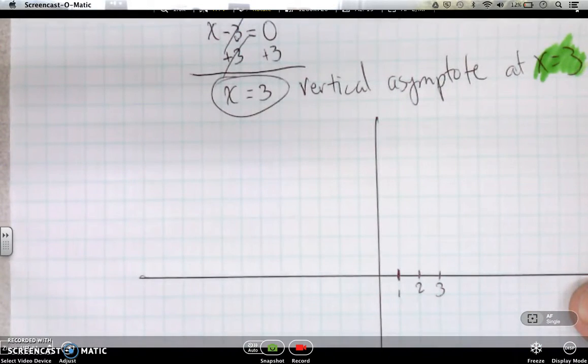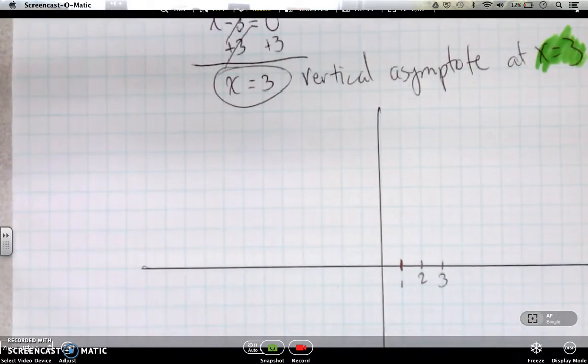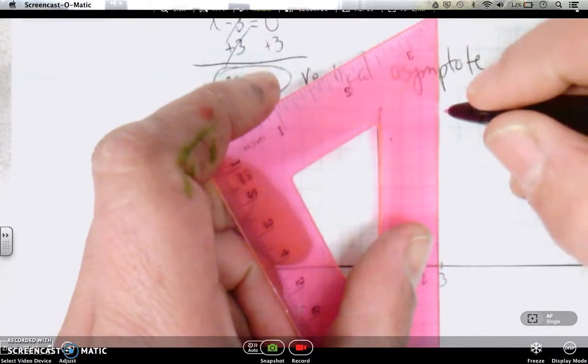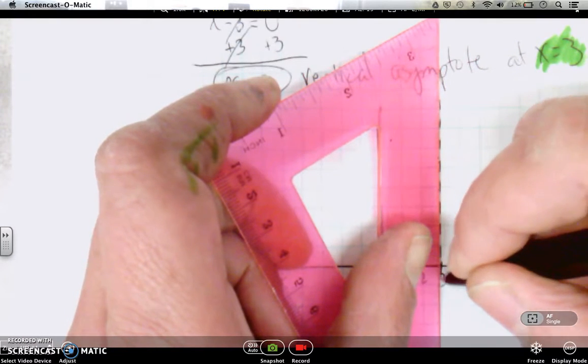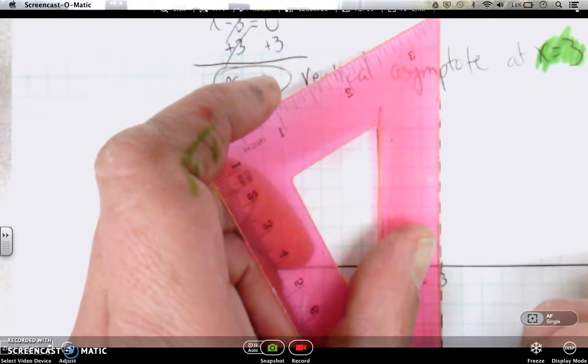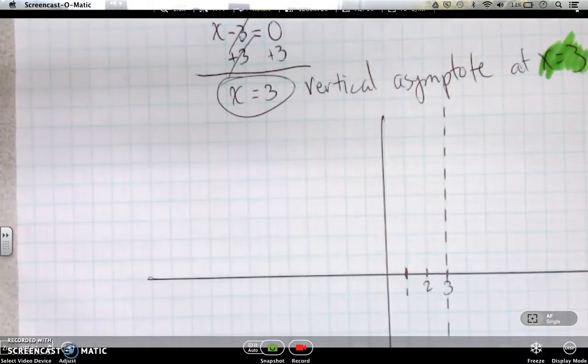So what that means is it can't cross that point. What that means for you is we're going to do these graphs by putting a dashed line there, saying this is a boundary line. The graph will not cross.